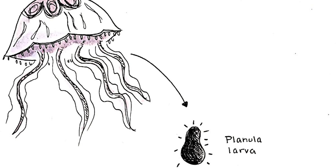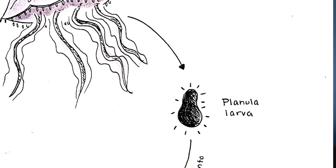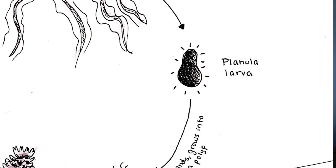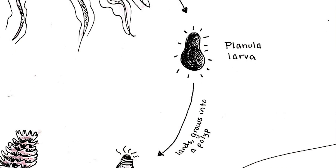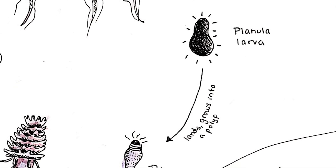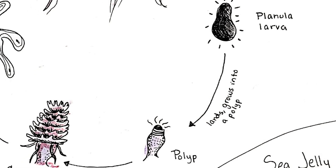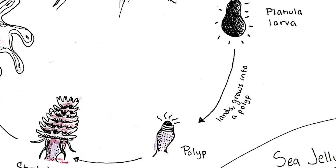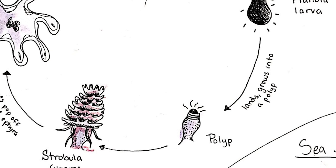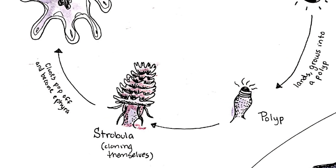Probably one of the most fascinating things about nidarians is their complex life cycle. If we look at the life cycle of a sea jelly, they start off as a planula larvae. This planula larvae is plankton — it just drifts around until it lands somewhere. Once it lands somewhere, it grows into a polyp.